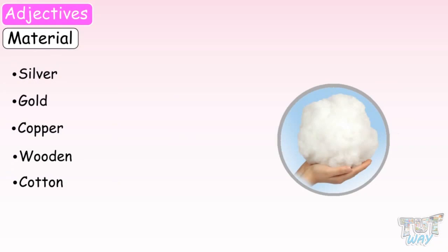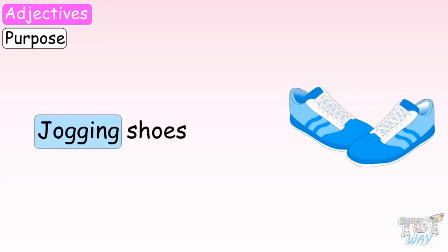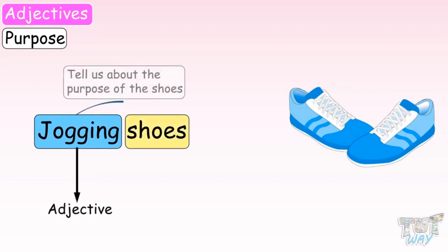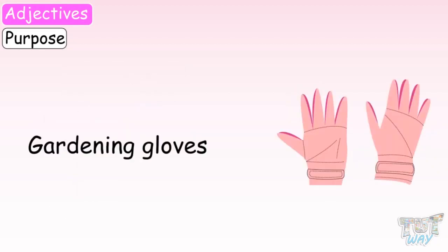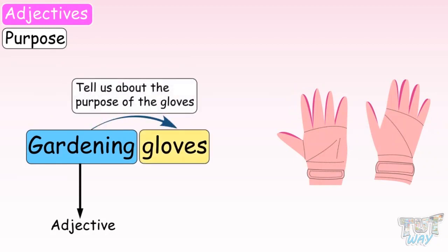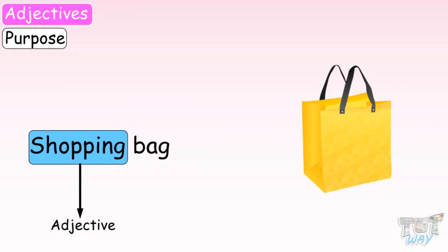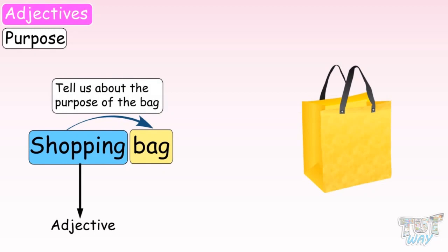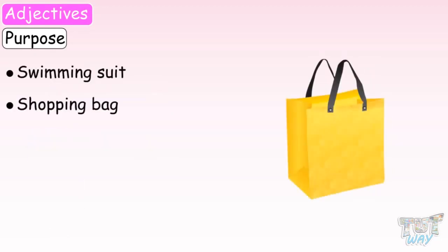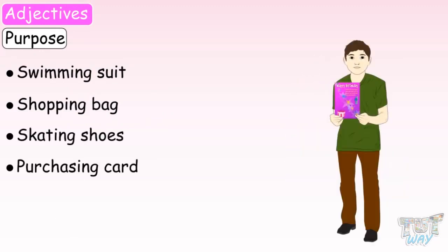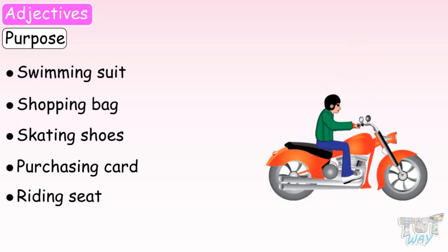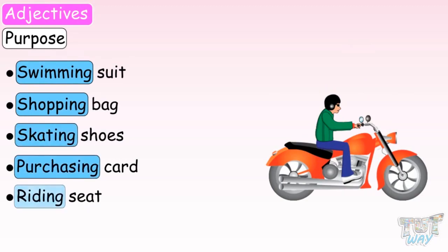There are also some adjectives that show the purpose of something or someone. For example, 'jogging shoes' — here, the word 'jogging' is an adjective that tells us about the purpose of the shoes. 'Gardening gloves' — here, 'gardening' is an adjective that shows the purpose of the gloves. Similarly, 'shopping bag' — 'shopping' shows the purpose of the bag. Other examples include: swimming suit, skating shoes, purchasing card, riding seat. So swimming, shopping, skating, purchasing, and riding are adjectives of purpose. We learnt that adjectives describe different qualities of a noun or pronoun.